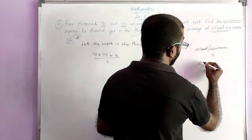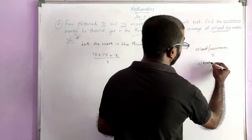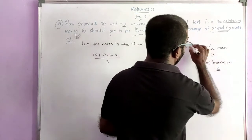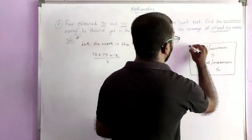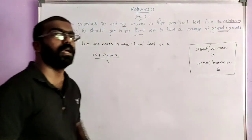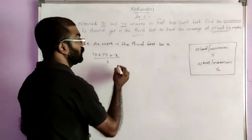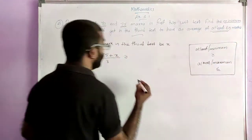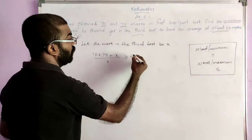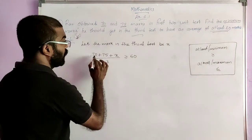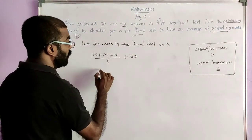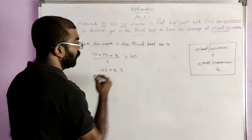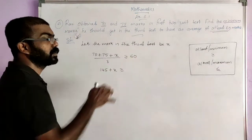If it is at most or maximum, we use less than or equal to symbol. These two things you have to remember. Here, at least 60, so we use the symbol greater than or equal to 60. We can add these two numbers: 70 plus 75 is 145, then plus X, greater than or equal to. This 3 we can cross multiply — 60 into 3.